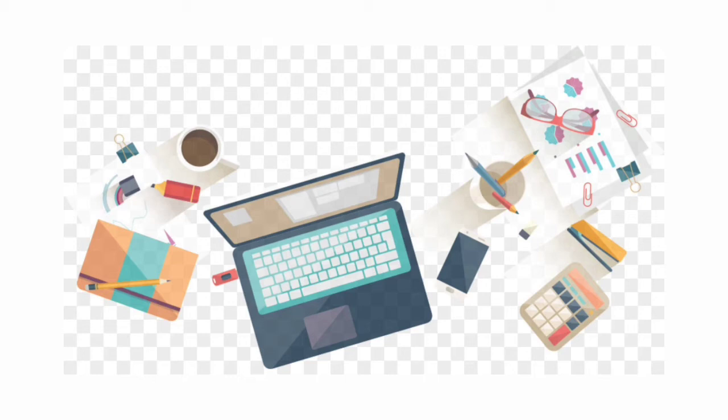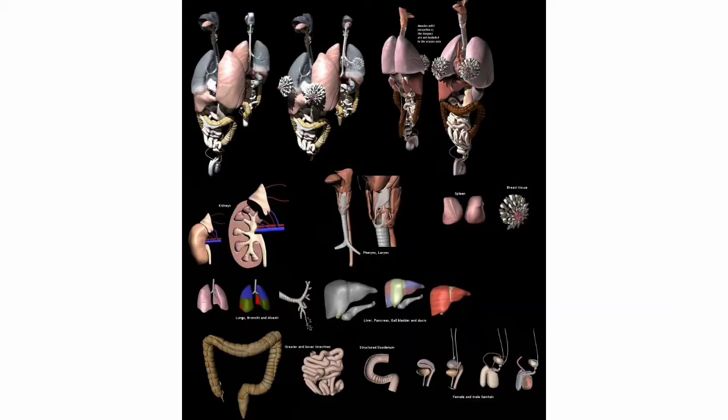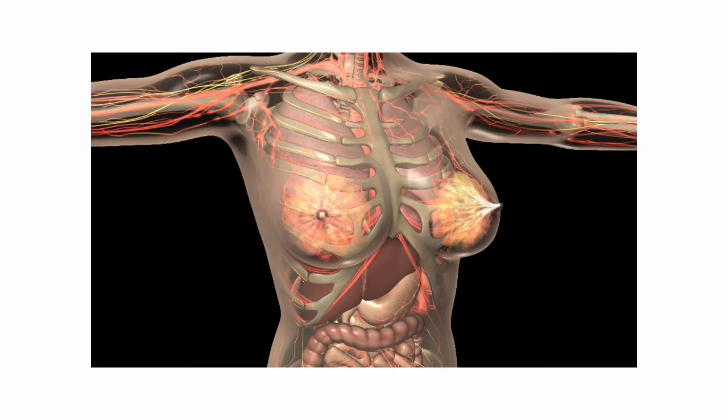In the same way, we study human anatomy. We study the relationships — we know which part is present where, what is in the surrounding area, and what the nerve supply, blood supply, weight, height, and other things of that part are.